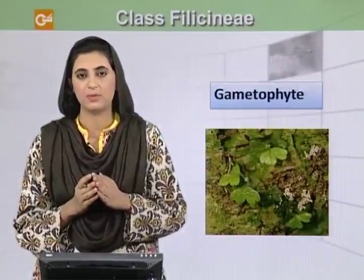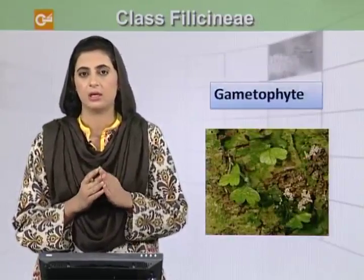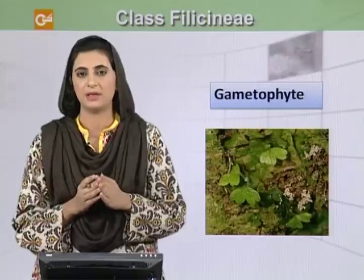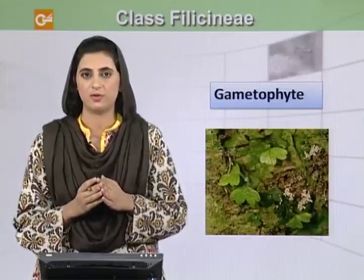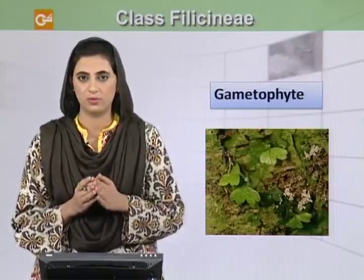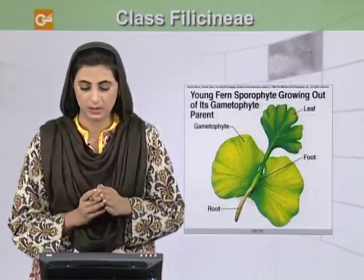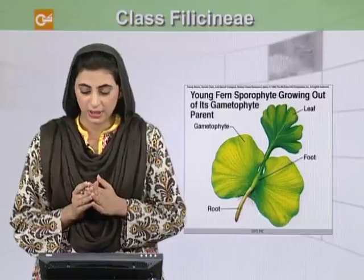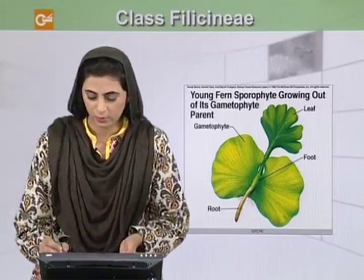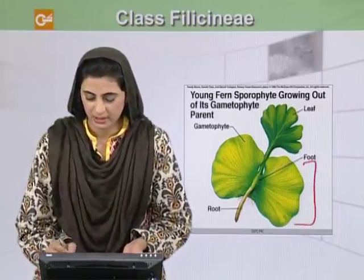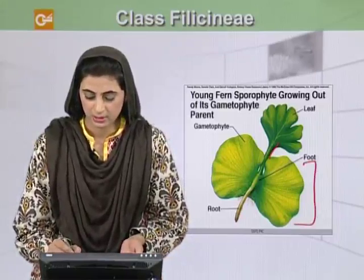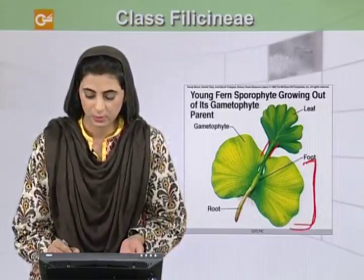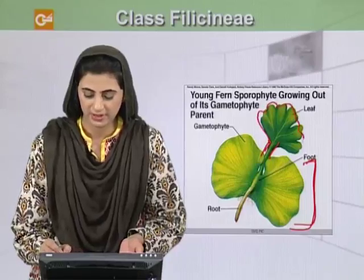Adiantum has a gametophyte body which is reduced and small, but it is independent and can photosynthesize its own food. You can see here that the young fern sporophyte is growing out of its gametophyte generation. This is the sporophyte growing out of the gametophyte.